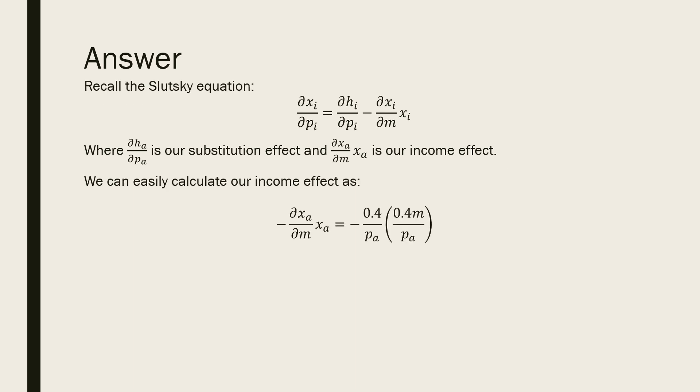We can easily calculate our income effect as being the negative 0.4 over the price of apples times 0.4m over the price of apples. We just put our Marshallian demand for apples there.